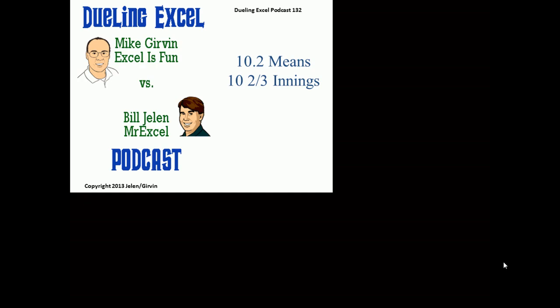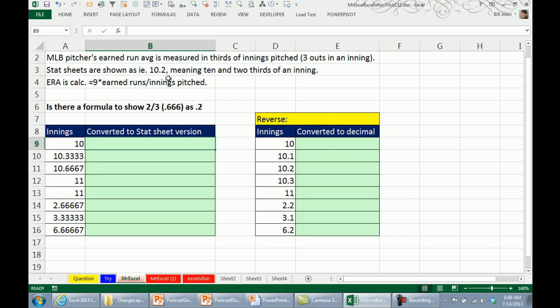Hey, welcome back. It's time for another Dueling Excel podcast. This is a great one today. I'm Bill Jelen from MrExcel.com. We're joined by Mike Gurren from Excel is Fun. This is our episode 132, 10.2 means 10 and two-thirds innings. Great question sent in today. It's baseball season here in the United States. In fact, I'm taking my nephew to the baseball game tonight. Major League Baseball, the pitcher's earn run average is measured in thirds of innings because there's three outs in an inning. But the stats sheets show it as 10.2, meaning 10 and two-thirds of an inning.